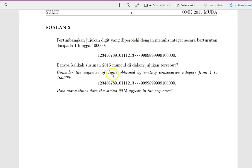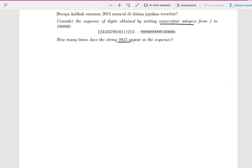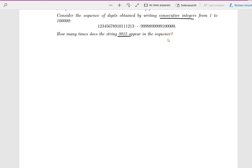Consider the sequence of digits obtained by writing consecutive integers from 1 to 100,000, so 1, 2, 3, 4, 5, 6, 7, 8, 9, 10, 11, 12, 13, until 100,000. So how many times does the string 2015 appear in the sequence? Let's scroll down for more space.